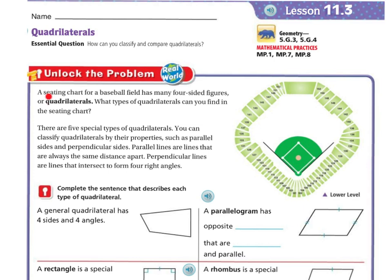Unlock the problem. A seating chart for a baseball field has many four-sided figures, or quadrilaterals. What types of quadrilaterals can you find in the seating chart? There are five special types of quadrilaterals. You can classify quadrilaterals by their properties, such as parallel sides and perpendicular sides. Parallel lines are lines that are always the same distance apart. Perpendicular lines are lines that intersect and form right angles.